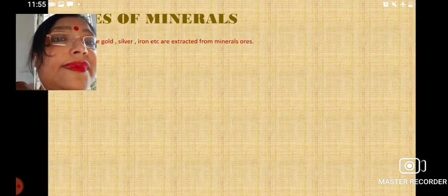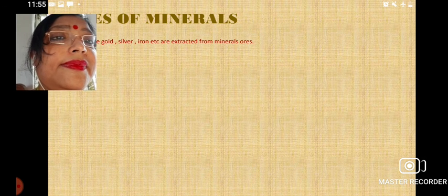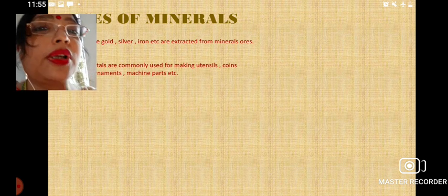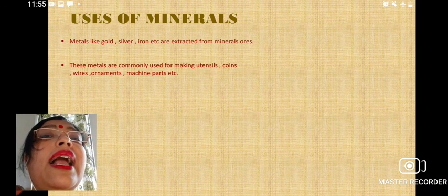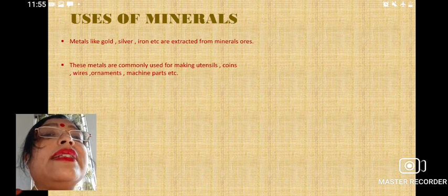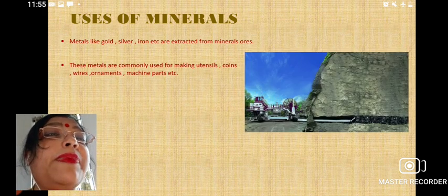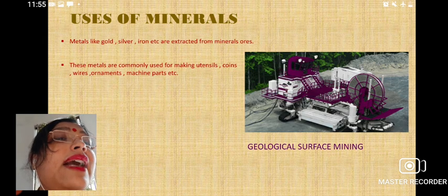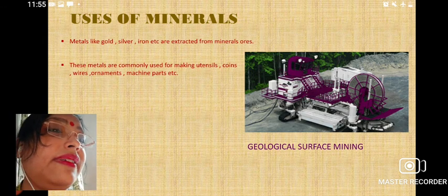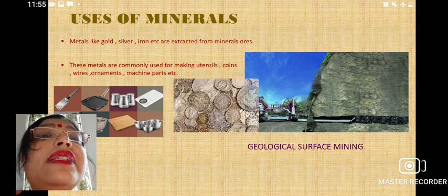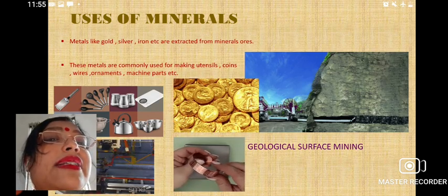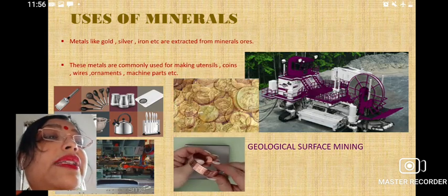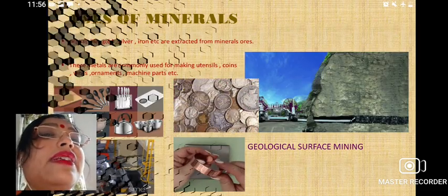Metals like gold and silver are extracted from mineral ores and are used for making utensils, wire, and machinery parts. You can see the different types of utensils, coins, and bangles — all these can be made using metals or minerals.